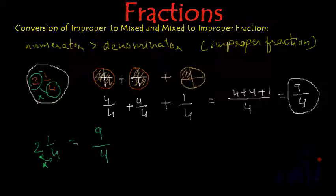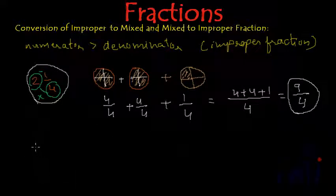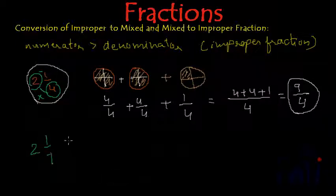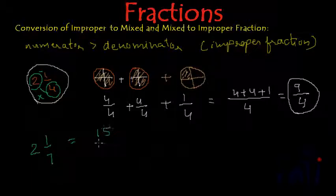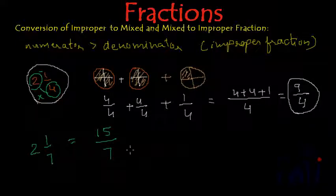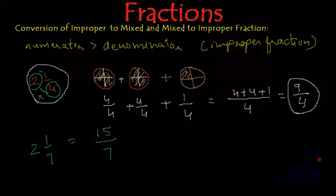One more example: for the mixed fraction 2 1/7, we multiply 2 by 7 to get 14, then add 1 to get 15. The denominator stays as 7, giving the improper fraction 15/7. This covers the conversion of mixed fractions to improper fractions and improper fractions to mixed fractions. Thank you.